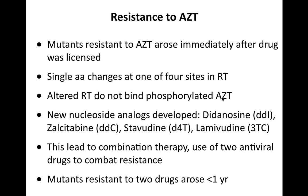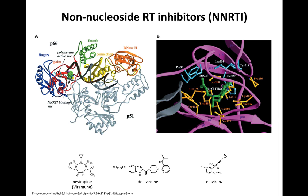As AZT resistance emerged, new nucleoside analogs were developed: didanosine (ddI), dideoxycytidine, stavudine, and lamivudine (3TC) — all chain terminators that get phosphorylated and engage in chain termination. Since there were so many of these, this led to the concept of combination therapy, using two antivirals at a time to combat resistance. While this worked initially, within a year mutants resistant to both drugs in the combination arose.